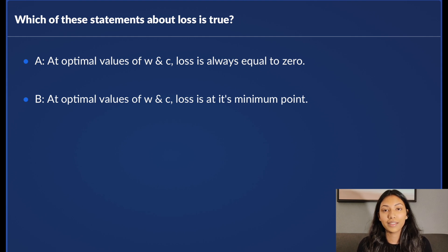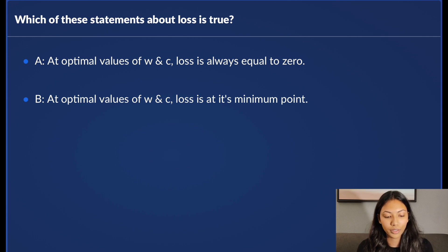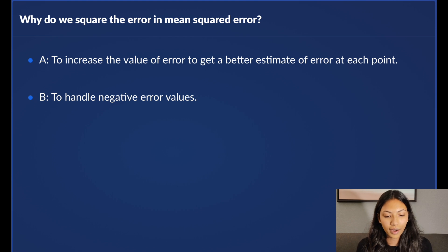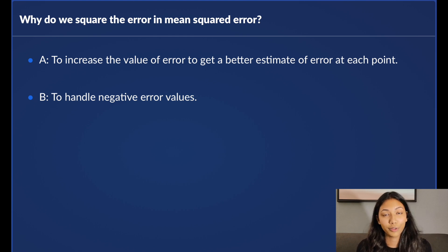We'll end today's session with a short quiz. Which of these statements about loss is true? A: At optimal values of w and c, loss is always equal to zero. B: At optimal values of w and c, loss is at its minimum point. The second question is: why do we square the error in mean squared error? A: To increase the value of error in order to get a better estimate of error at each point. B: To handle negative error values. Leave your answers in the comment section below.